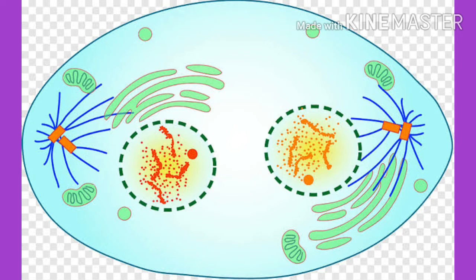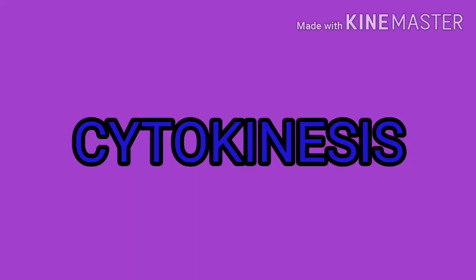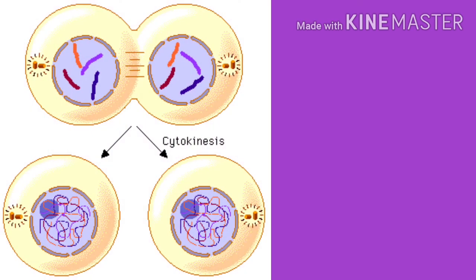Coming to telophase 1: chromatids arrive at opposite poles of the cell and new membranes form around the daughter nuclei. The chromosomes disperse and are no longer visible under the light microscope. Spindle fibers disperse, and cytokinesis may also begin during this stage. Cytokinesis through constriction and furrow formation results in the formation of two daughter nuclei.